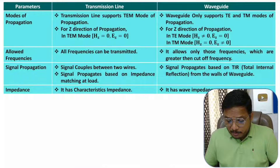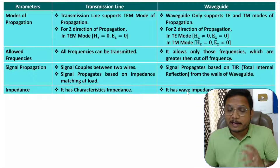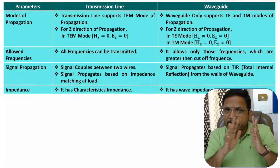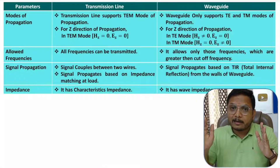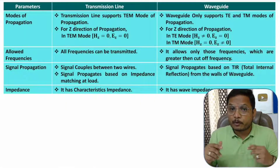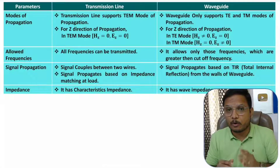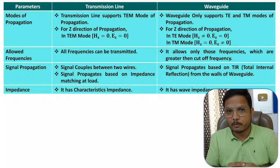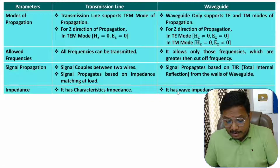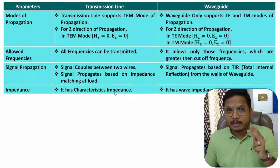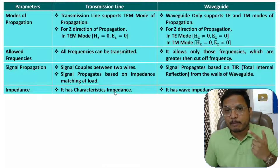With a waveguide, we use the term wave impedance. Inside the waveguide, EM waves propagate based on total internal reflection, and impedance matching at the load side is done based on wave impedance. For free space, the wave impedance value is 377 ohms. So in a waveguide, impedance matching is done with respect to wave impedance, while in a transmission line it is done with respect to characteristic impedance for maximum power transfer.